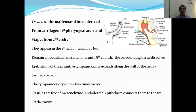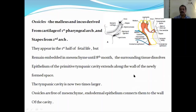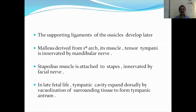Coming to the ossicles — the malleus, incus, and stapes. The malleus and incus derive from the cartilage of the first pharyngeal arch and the stapes from the second arch. They appear in the first half of fetal life but remain embedded in mesenchyme until 8 months, when the surrounding tissue dissolves. The epithelium of the primitive tympanic cavity extends along the wall of the newly formed space. The tympanic cavity is now two times larger than its original size. The ossicles are free of mesenchyme; the endodermal epithelium connects them to the wall of the cavity. The supporting ligaments of the ossicles develop in the later period.